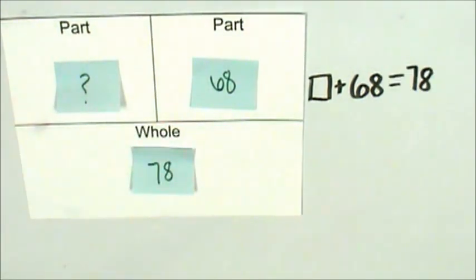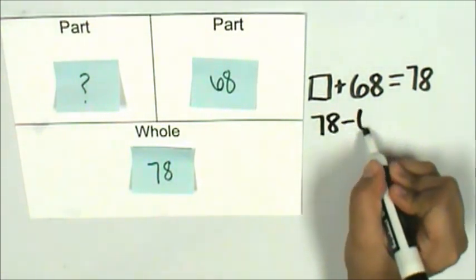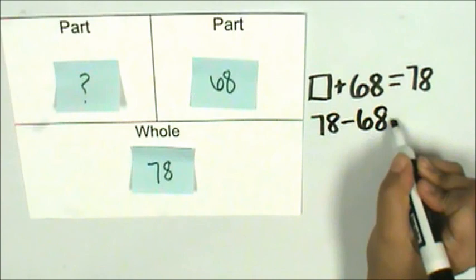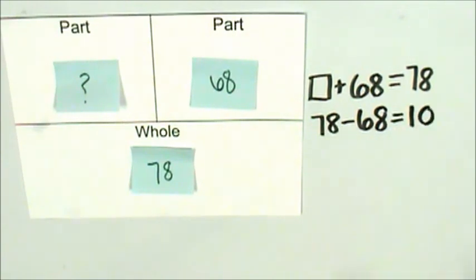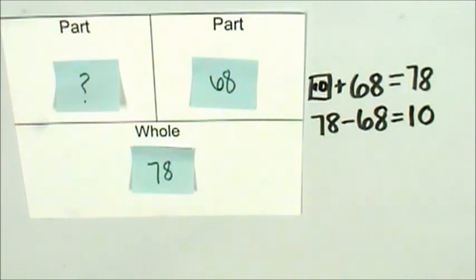We need to figure out how to find the unknown number. I'm going to use subtraction to figure out my unknown number. 78 minus 68 is 10. 10 plus 68 is 78.